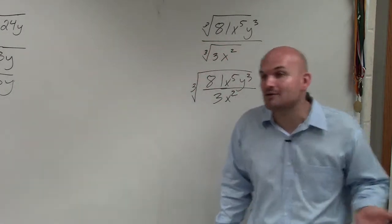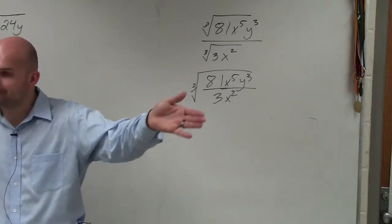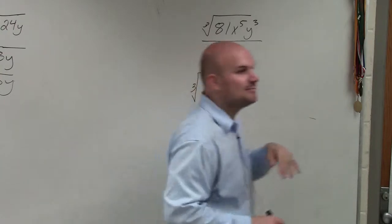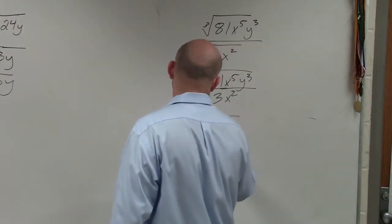Now this looks like simplifying rational expressions using the rules of exponents, which we've already done, if you guys remember. So now I can simplify 81 divided by 3, which is 27.